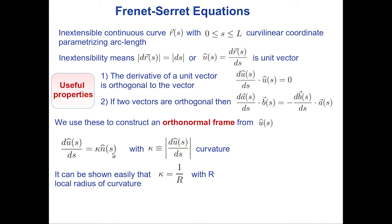Having u and n — two orthogonal unit vectors — we complete the triad by taking the cross product b = u × n, giving the binormal. So for every continuous curve described by r(s), we have a tangent u, a normal n, and a binormal b forming an orthonormal frame.